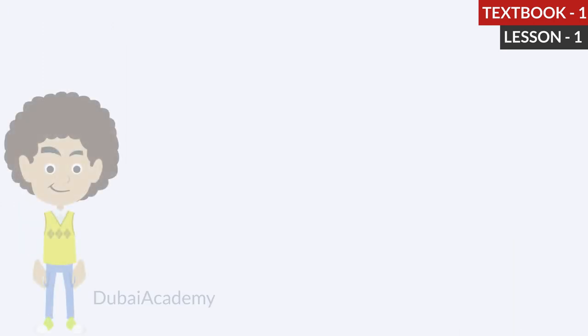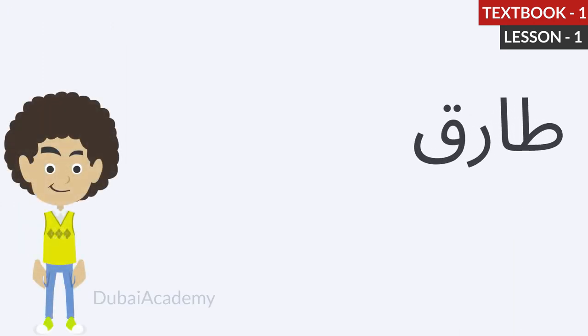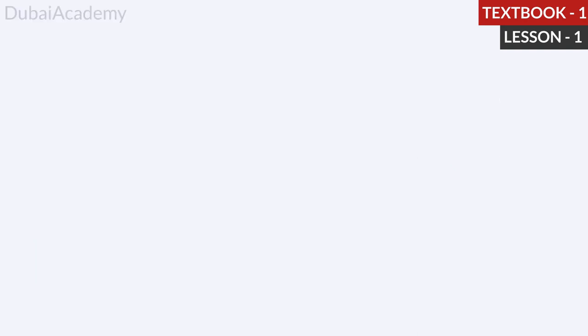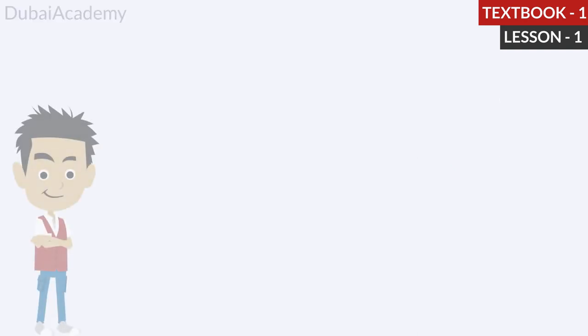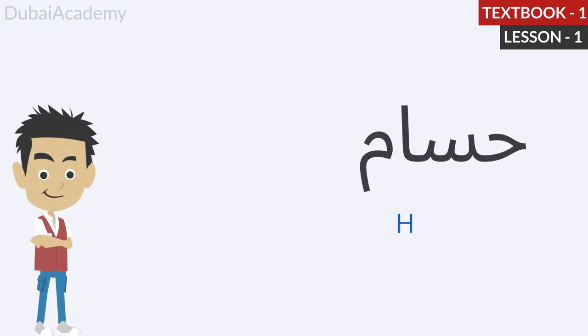The boy with the yellow shirt and blue pants is Tariq. Let's repeat: Tariq. The boy in the red shirt and blue pants is Hissam. Let's repeat: Hissam.